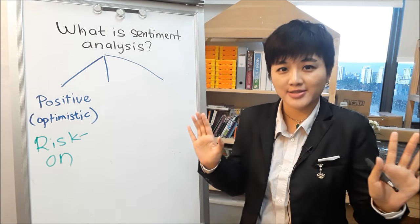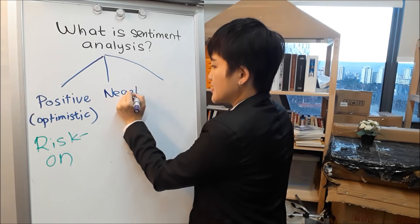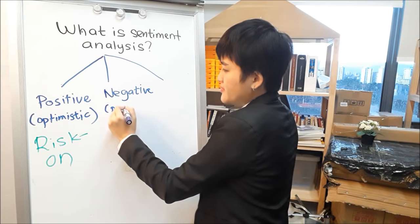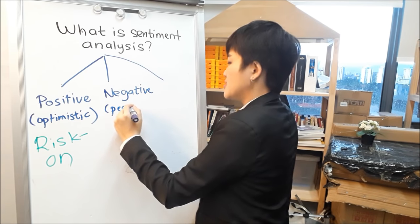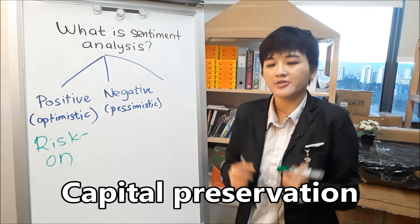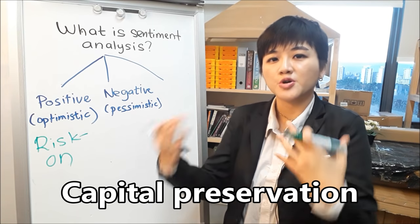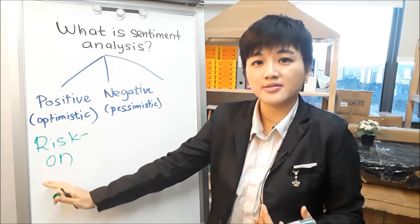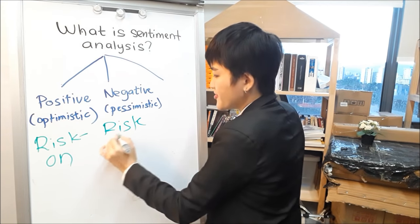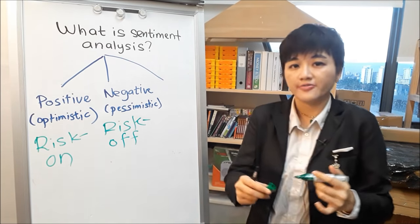The second type of emotion is people are feeling down, very sad, feeling negative about things. The economy is not doing so well. When there's a recession, people just want to keep their money. Their main focus is to preserve capital rather than grow their wealth. People want to protect what they have. In finance, it is called a risk-off environment.